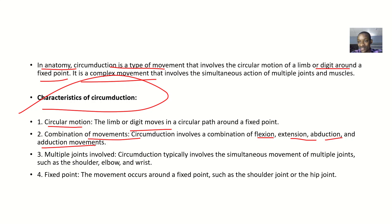Multiple joints are involved - circumduction typically involves simultaneous movement of multiple joints such as the shoulder, elbow, and wrist. The movement occurs around a fixed point, such as the shoulder joint or the hip joint.